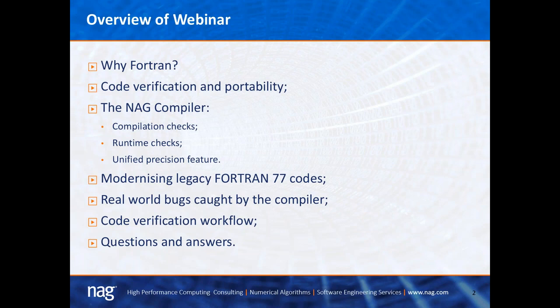Today's agenda: I'll talk about why we should still use Fortran, followed by code verification, portability, and how the NAG compiler can help. Then I'll cover the compilation checks and additional runtime checks, the unified precision feature, tools to modernize legacy Fortran 77 codes, real-world bugs caught by the compiler, and a recommended code verification workflow. There will be approximately 10 minutes for questions and answers.